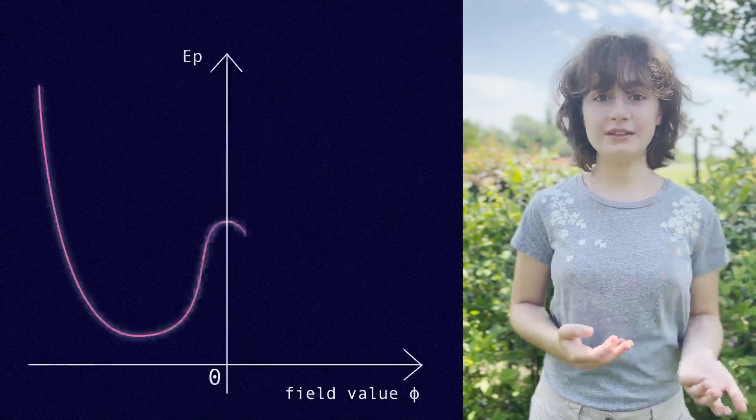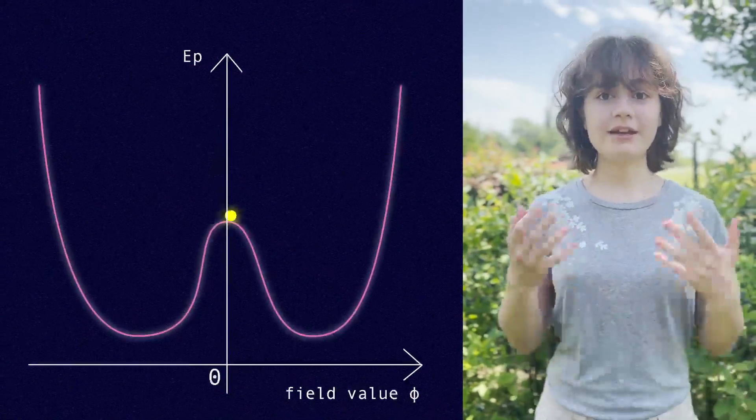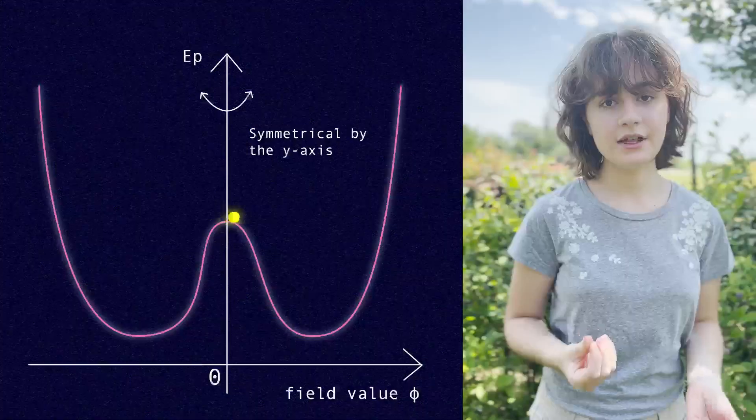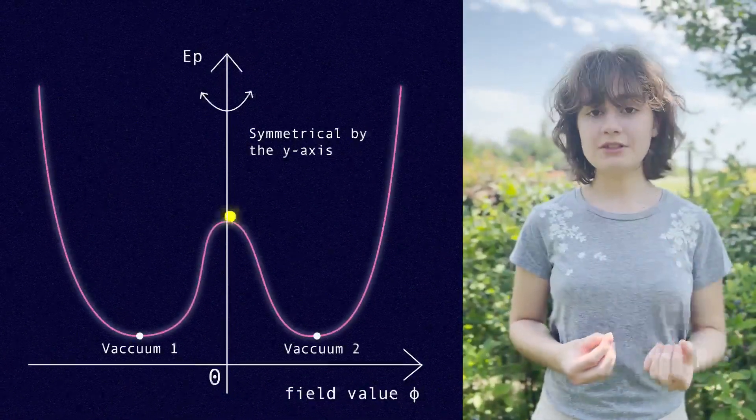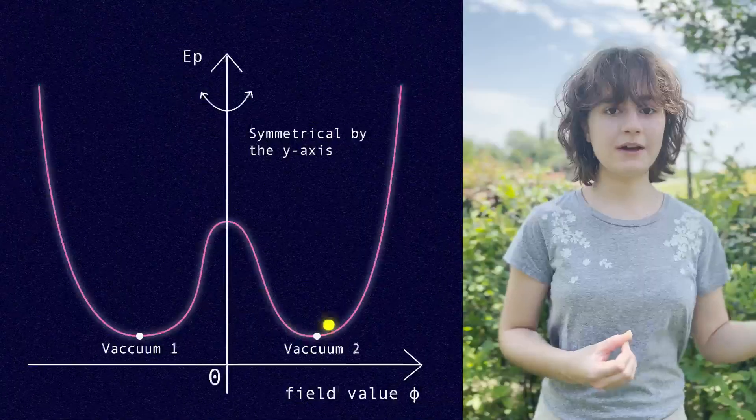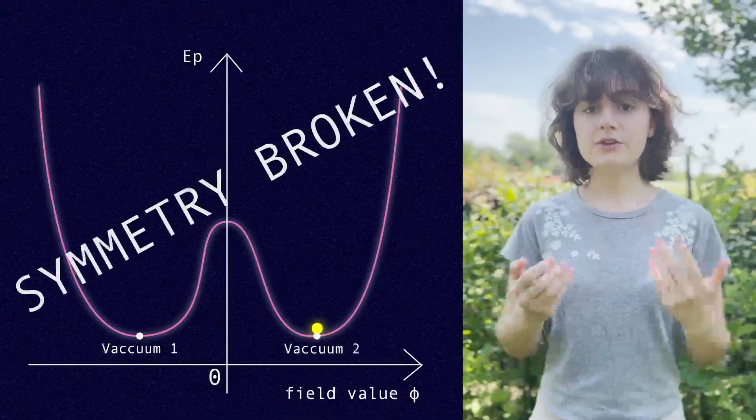The Higgs field is unique in that at its zero field value, it has a very high energy, so it really wants to move to a lower state. The lower energy states are located around the zero field value, which means that the field has to choose a specific vacuum state to occupy, thus breaking the symmetry.